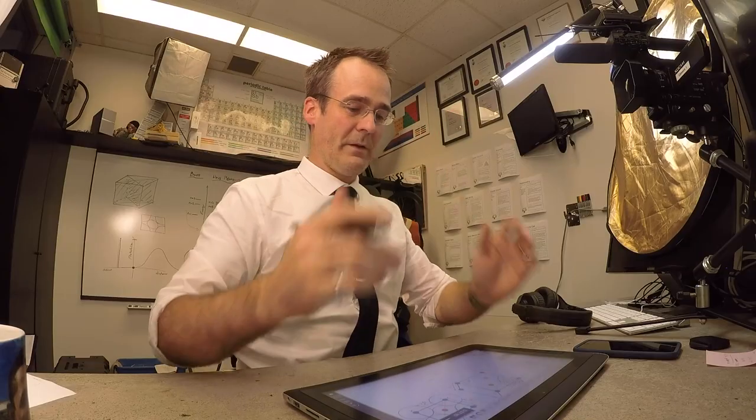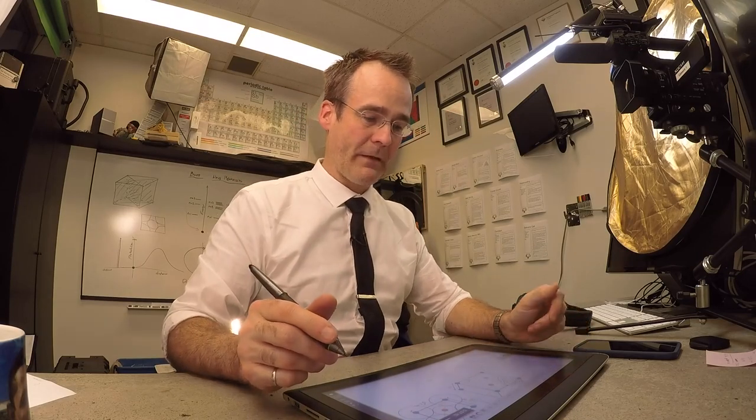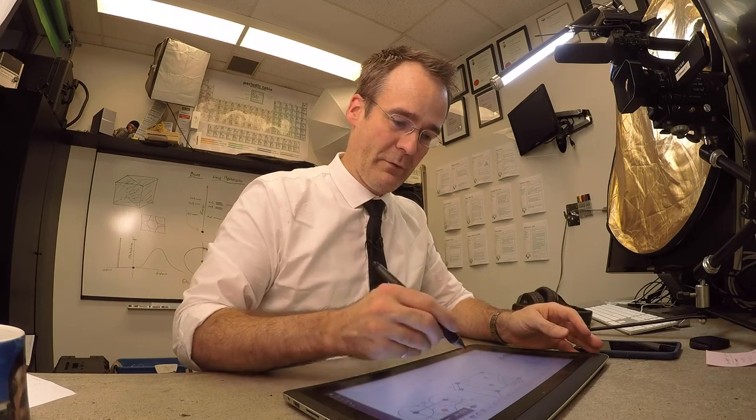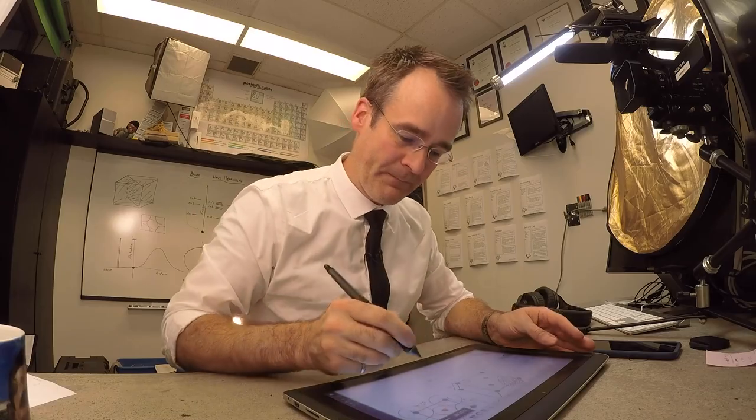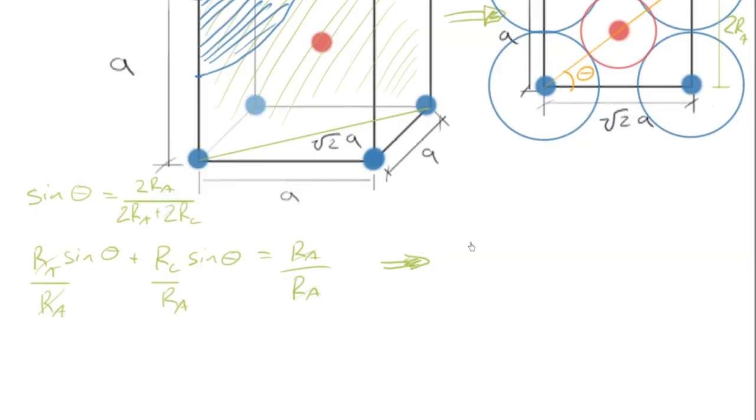Remember, we proceeded similarly, except we had a nice two-dimensional slice to begin with, without having to do the little bit of extra geometry coming across the cube diagonal here.